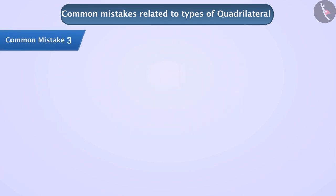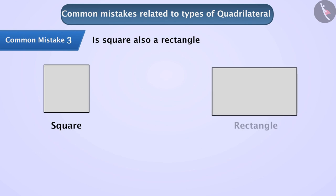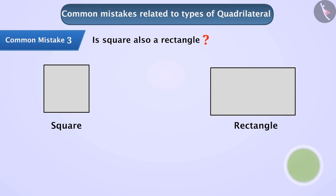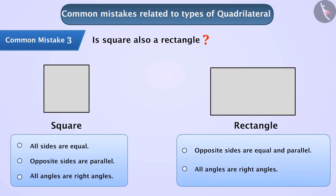Common Mistake 3: is a square a rectangle too? Many students think that a square is not a rectangle because it does not look like one. Remember that we identify quadrilaterals on the basis of their properties and not just by looking at them. Just like in a rectangle, opposite sides of a square are equal and parallel, and all angles of a square are right angles. Therefore, a square is also a rectangle.